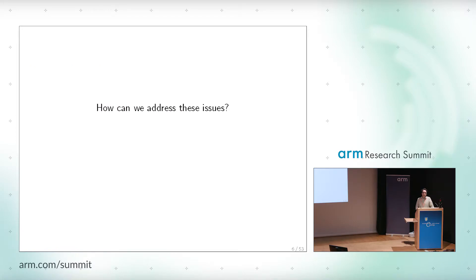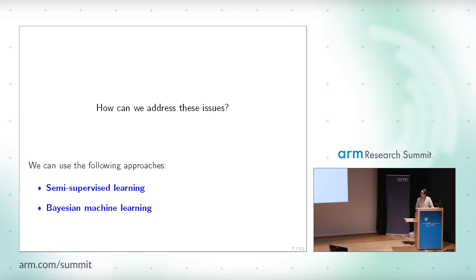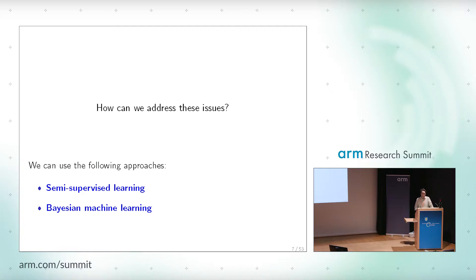So in this talk, we try to address these two issues of deep learning: that they require a lot of data, and that they fail to produce estimates of uncertainty. For that, we are going to use two different techniques. The first is semi-supervised learning methods, which allow us to use only a small number of labeled examples to still obtain good predictive accuracy with deep learning by exploiting large amounts of unlabeled data. We will also use Bayesian machine learning techniques to produce estimates of uncertainty in the predictions.